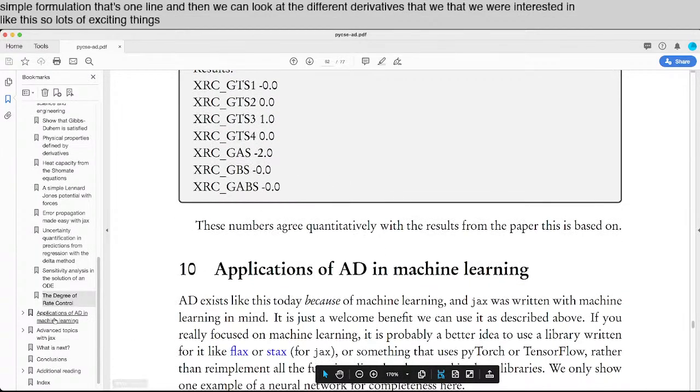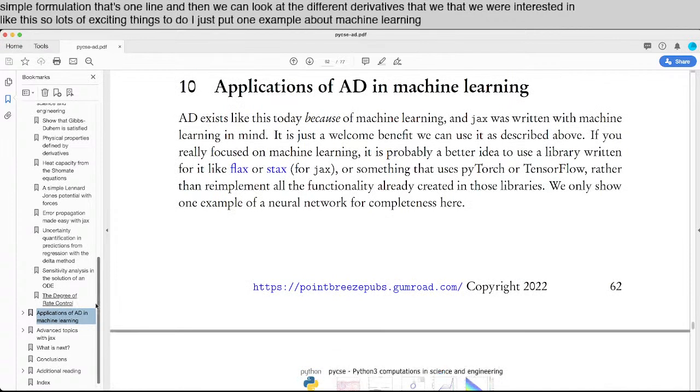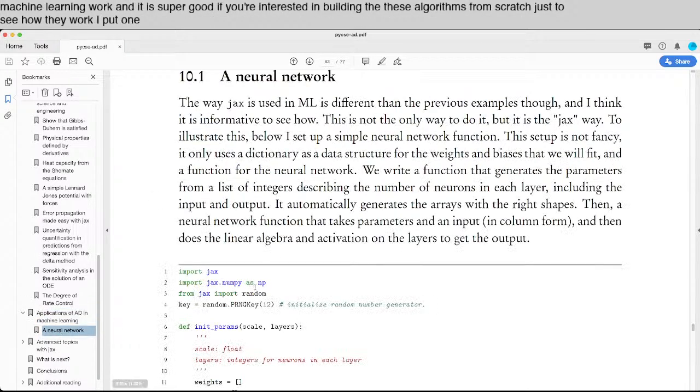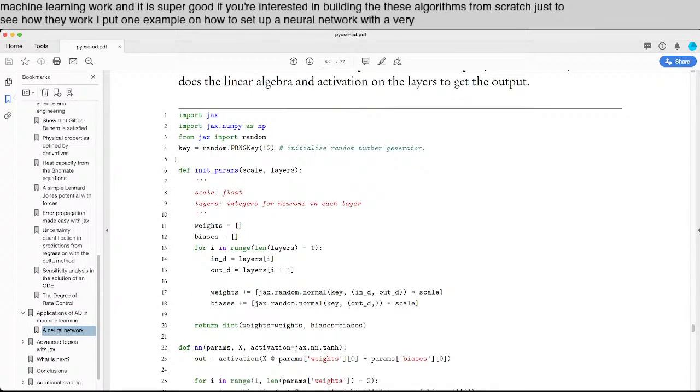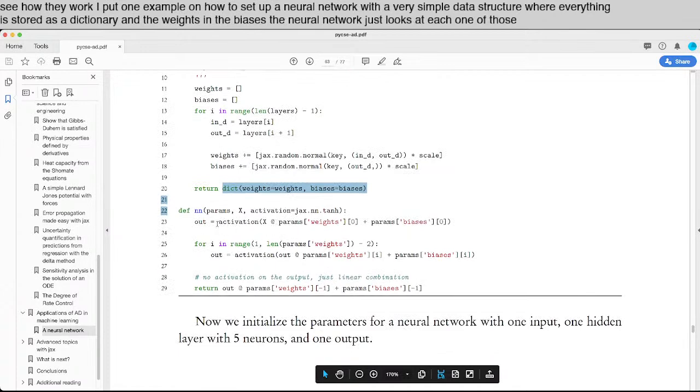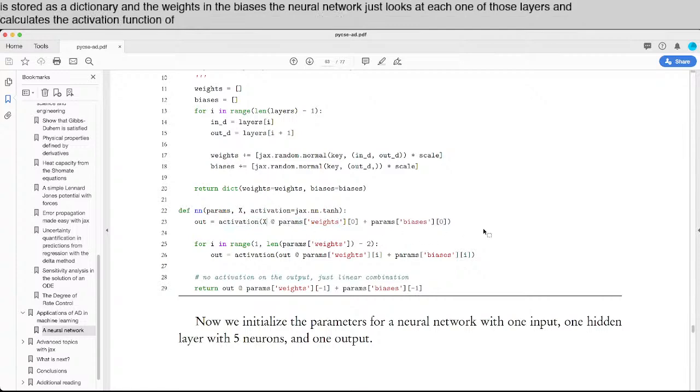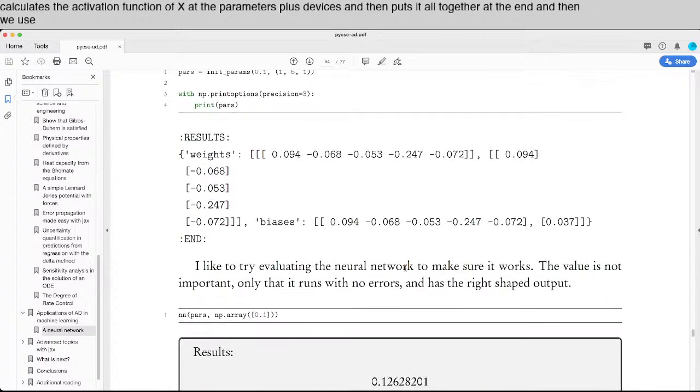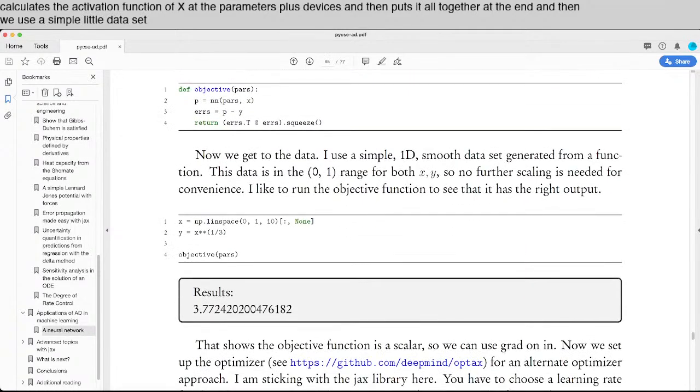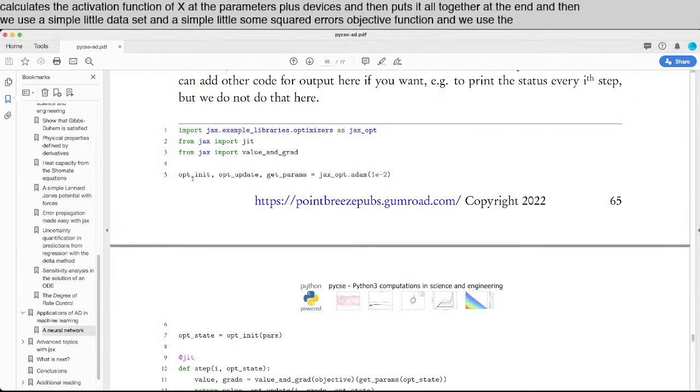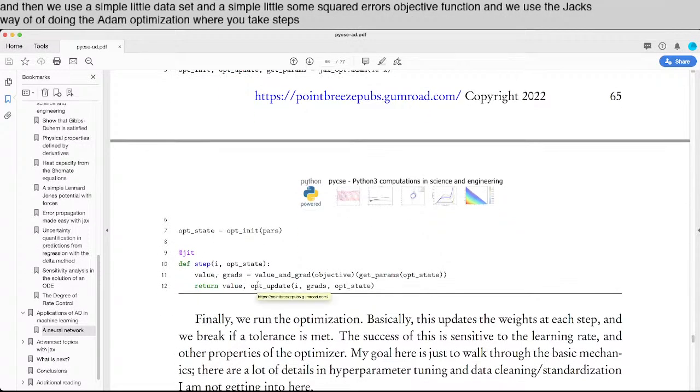So lots of exciting things to do. I just put one example about machine learning. JAX was probably written for people to do machine learning work. And it is super good if you're interested in building these algorithms from scratch just to see how they work. I put one example on how to set up a neural network with a very simple data structure where everything is stored as a dictionary with the weights and the biases. The neural network just looks at each one of those layers and calculates the activation function of x at the parameters plus the biases and then puts it all together at the end. And then we use a simple little data set and a simple sum squared errors objective function. And we use the JAX way of doing the Adam optimization where you take steps and update the weights in each step.